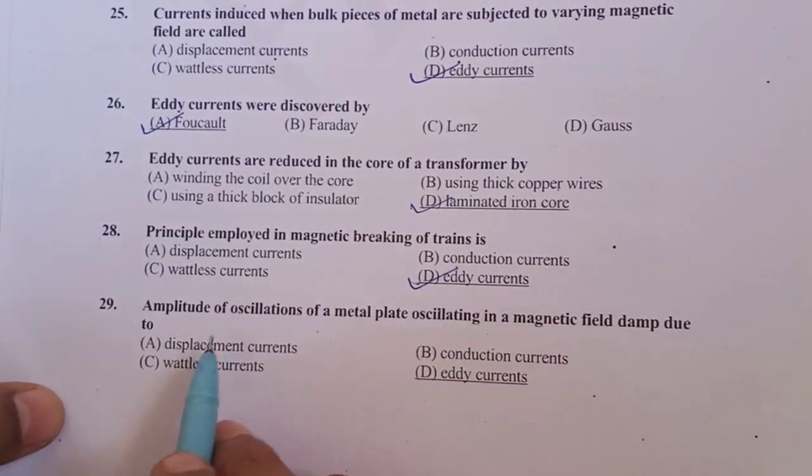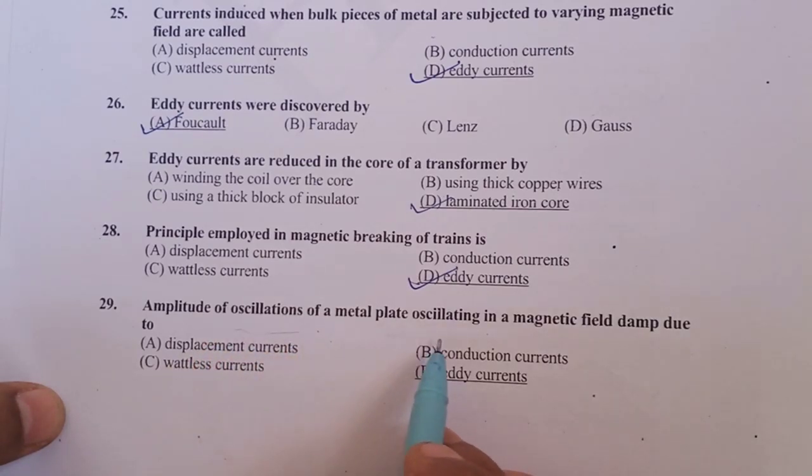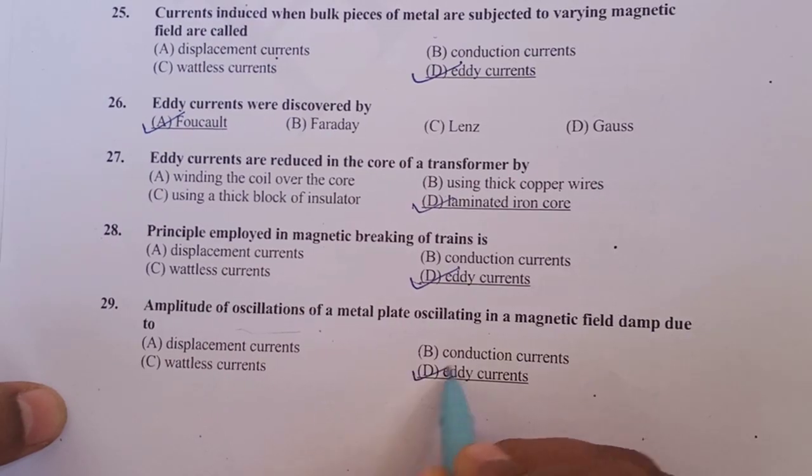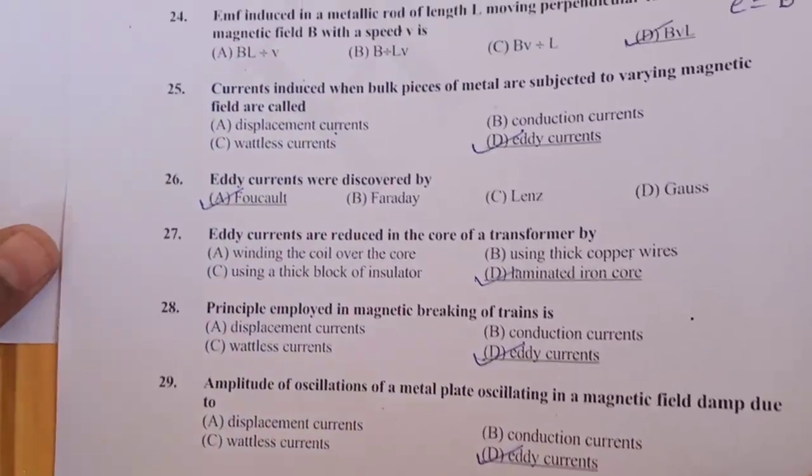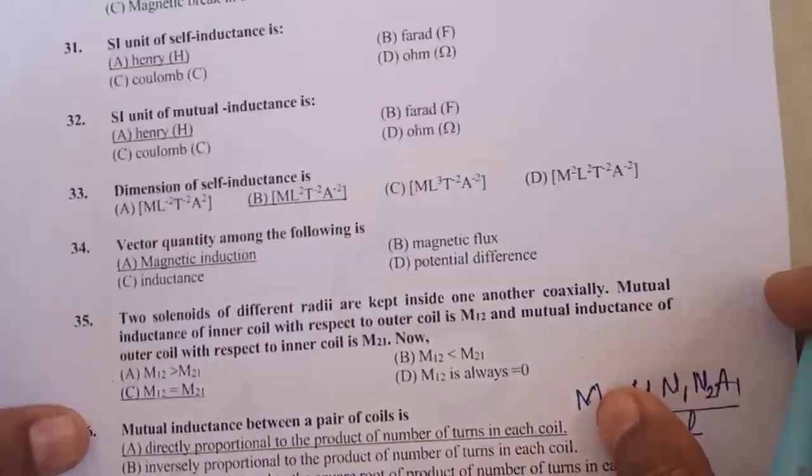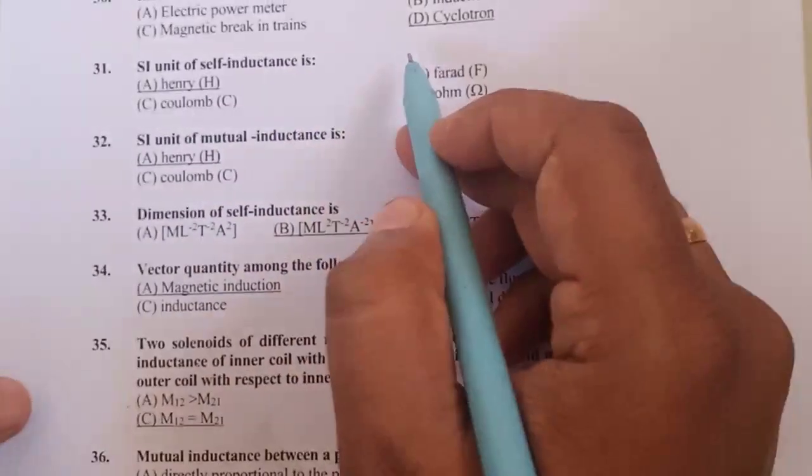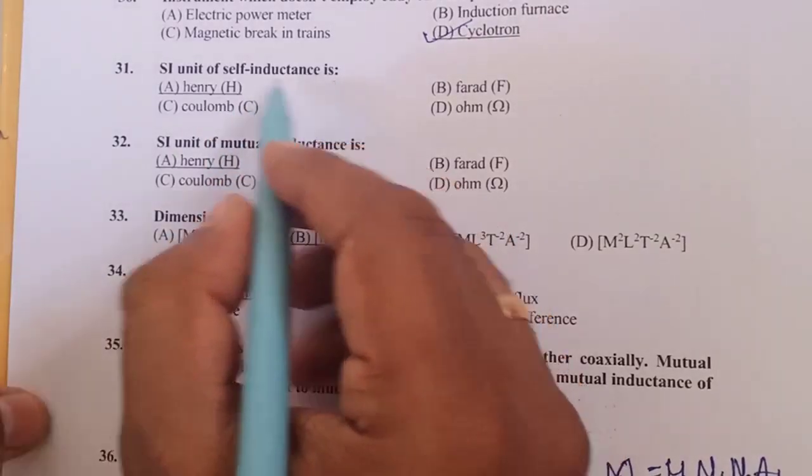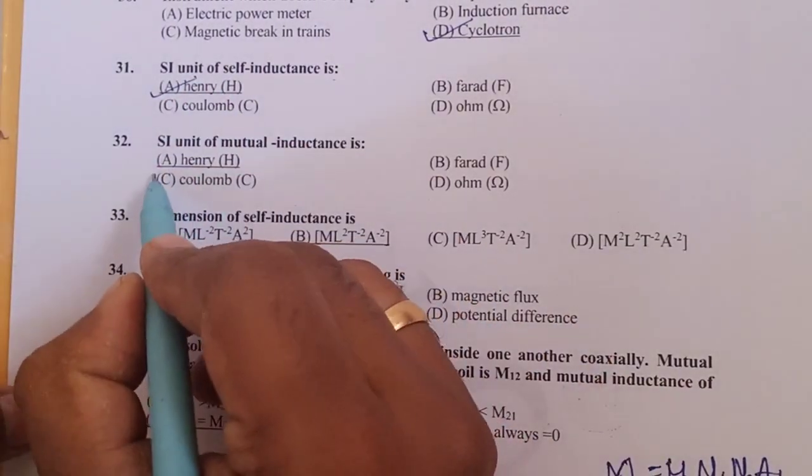Principle employed in magnetic braking in trains is eddy currents. Amplitude of oscillation of the metal plates oscillating in a magnetic field damps due to eddy current, that is called magnetic damping. Instrument which does not employ the eddy currents is cyclotron. It does not work on that principle.